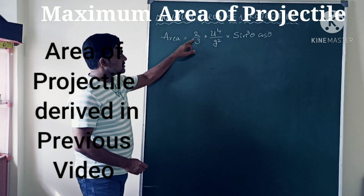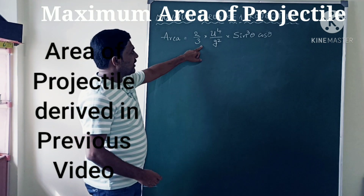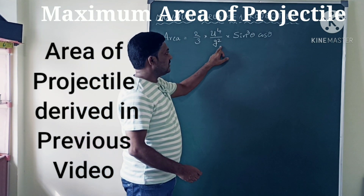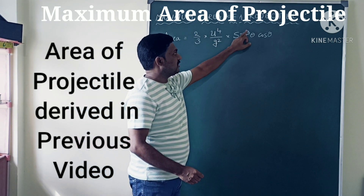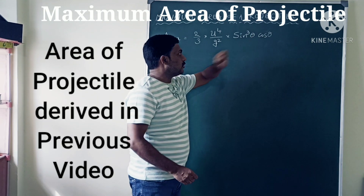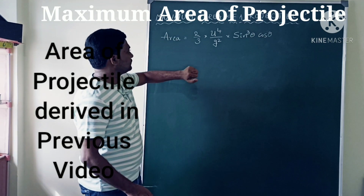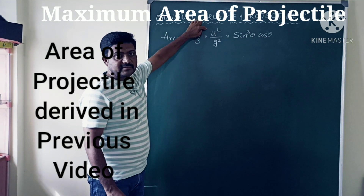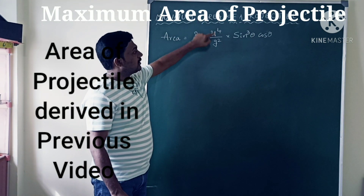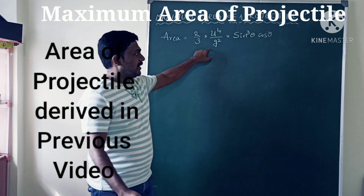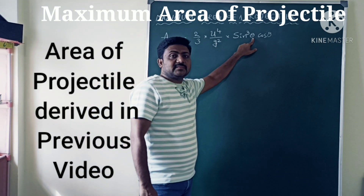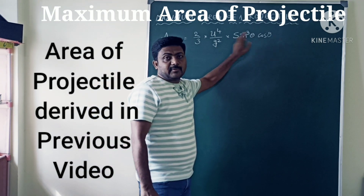The area formula is: A = (2/3) × u⁴/g² × sin³θ × cosθ, where u is the velocity of the projectile, g is acceleration due to gravity, and θ is the angle of projection.